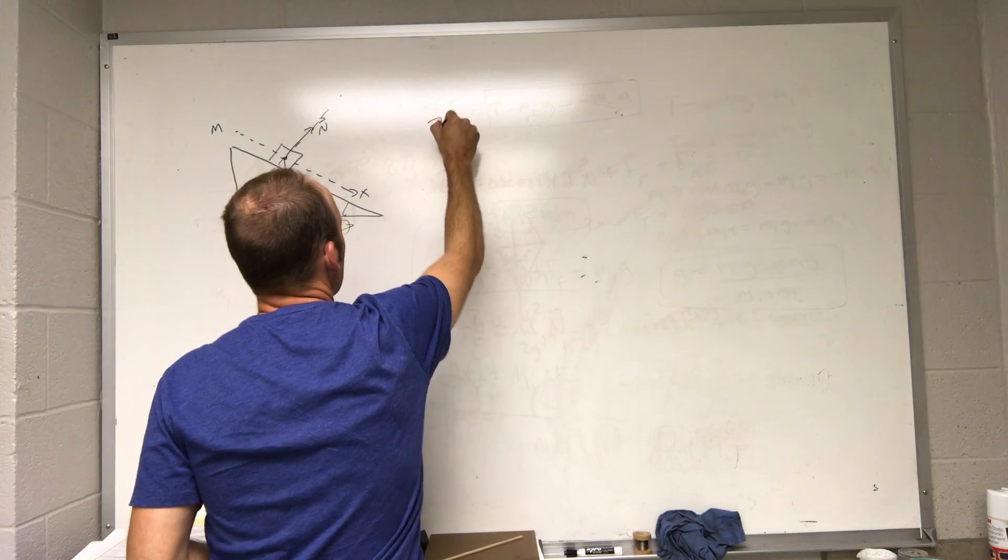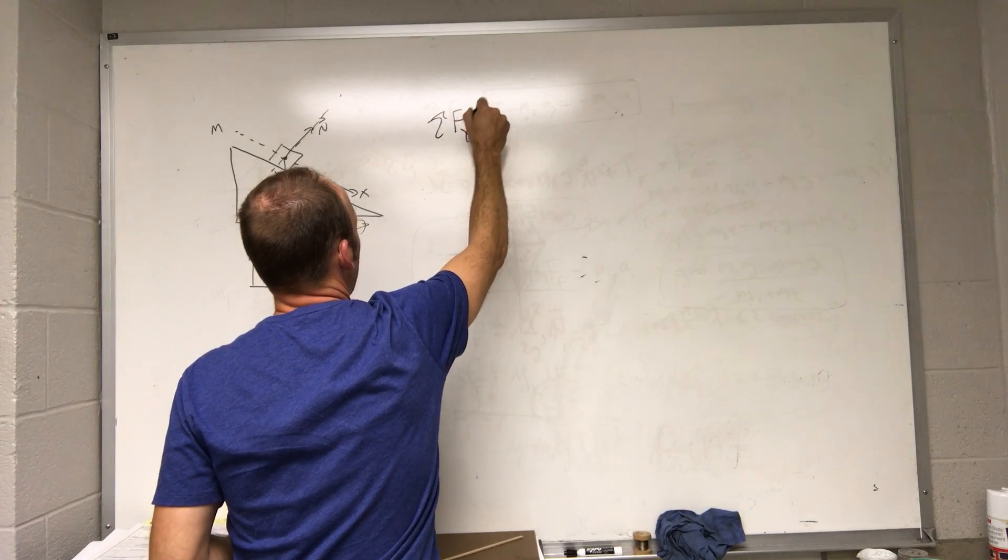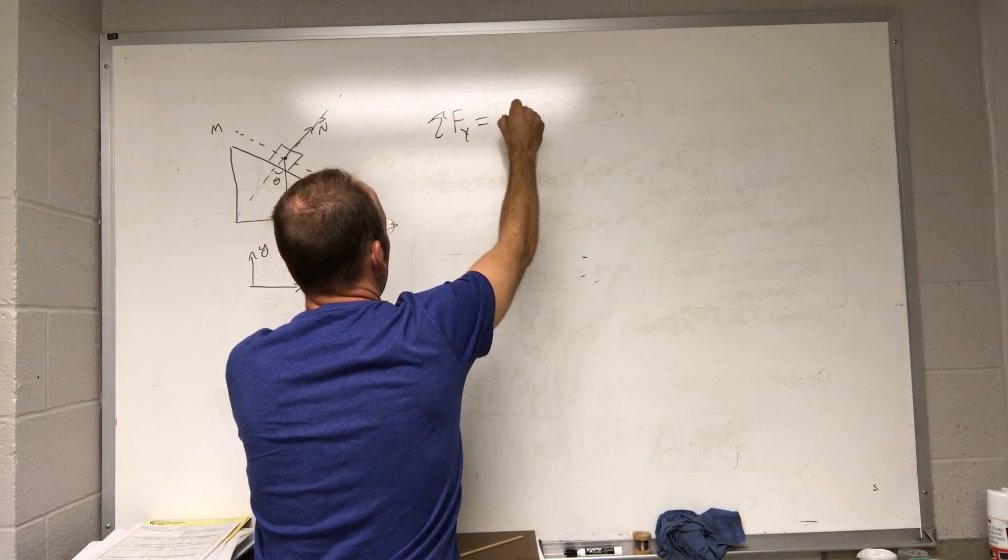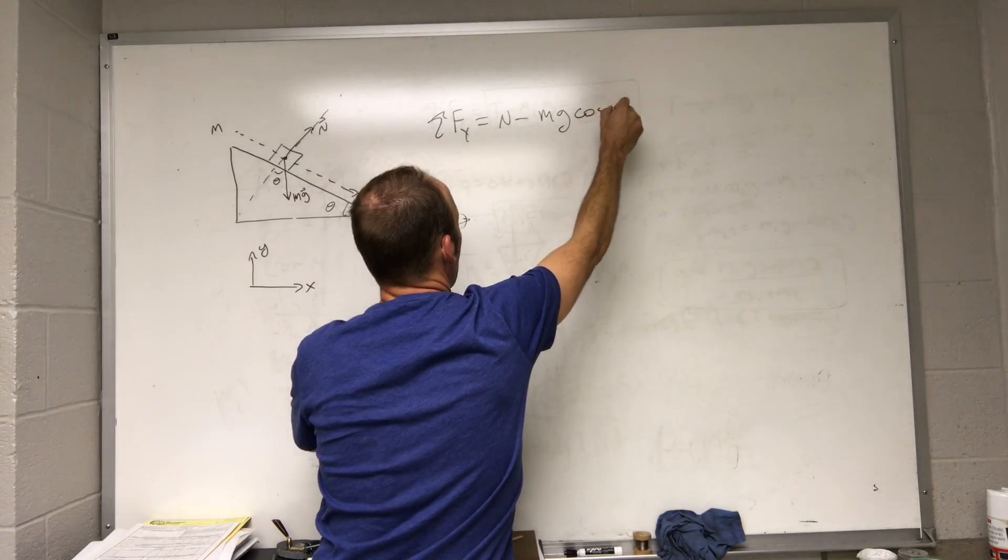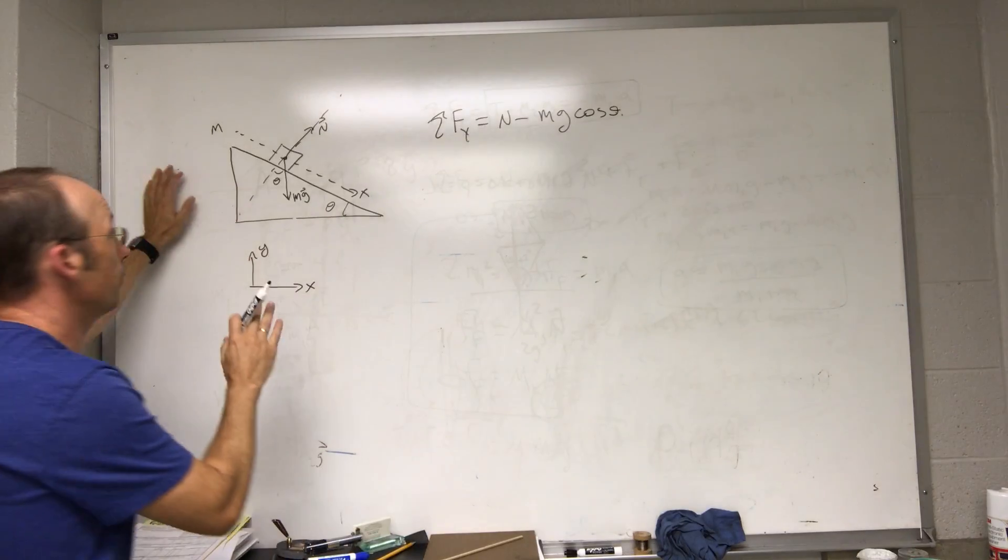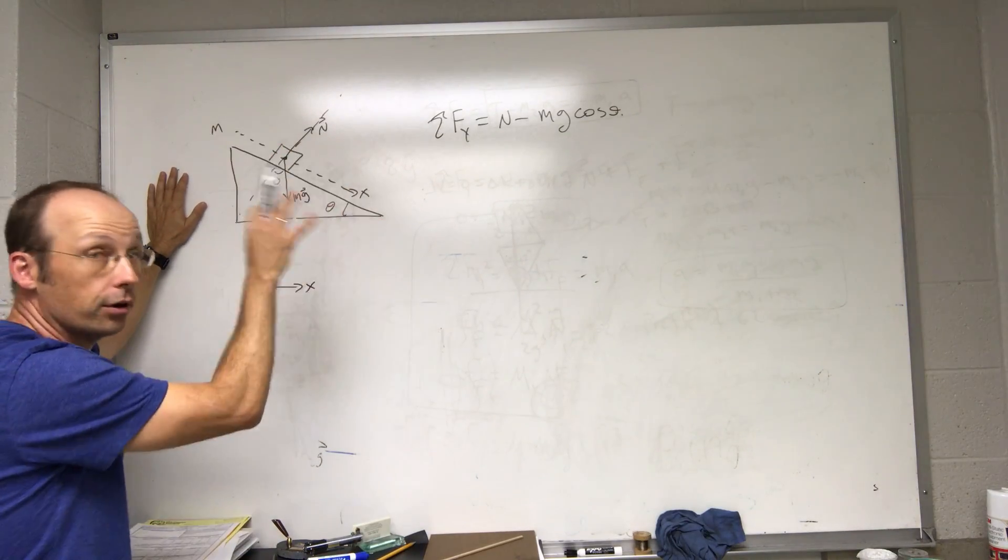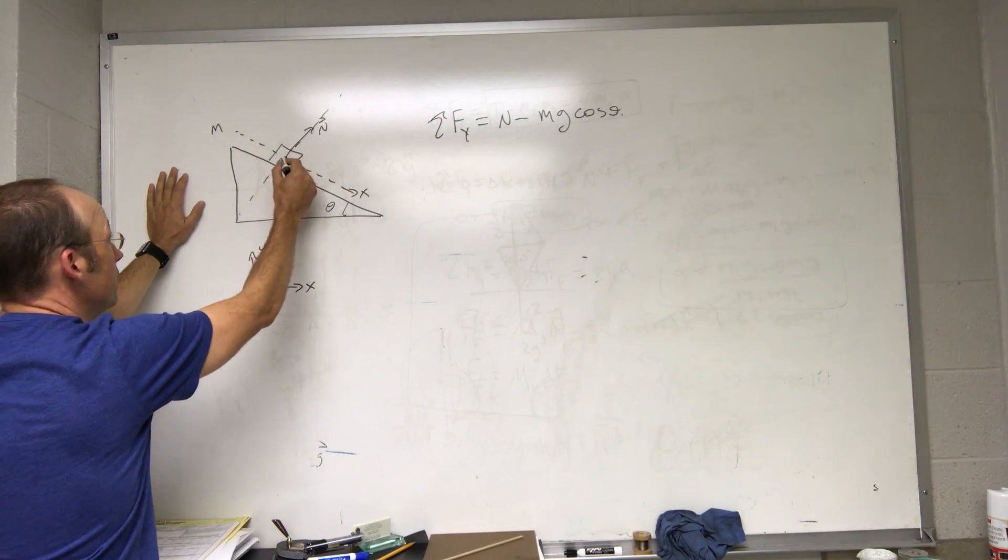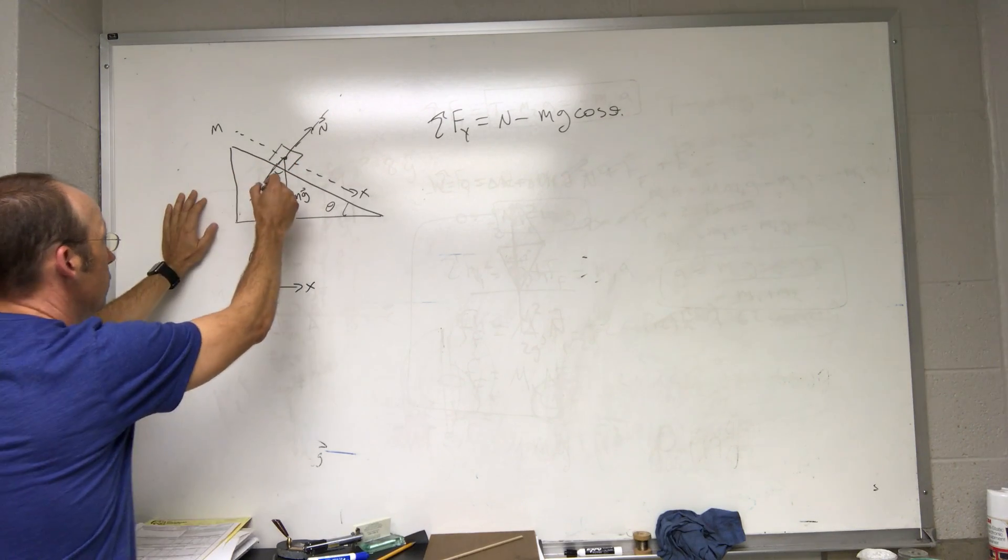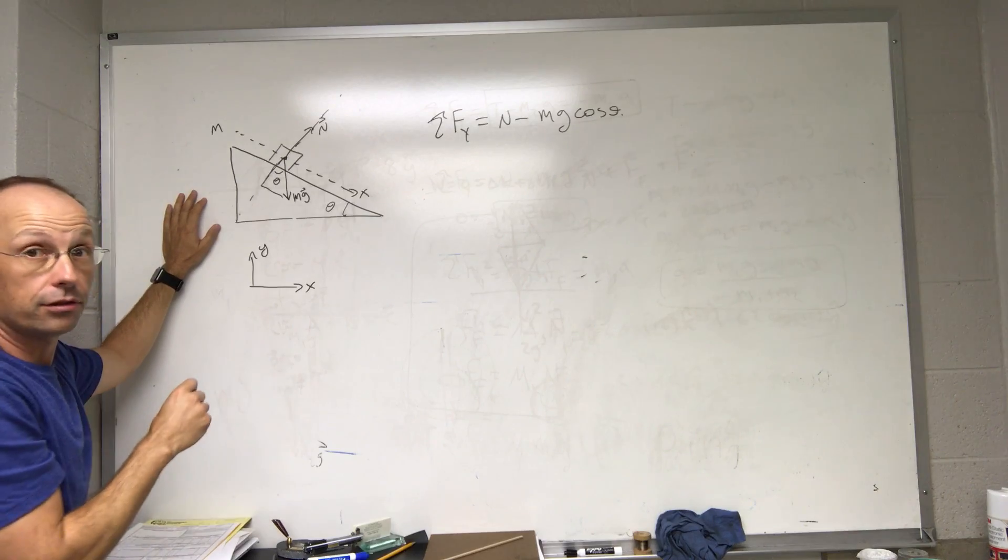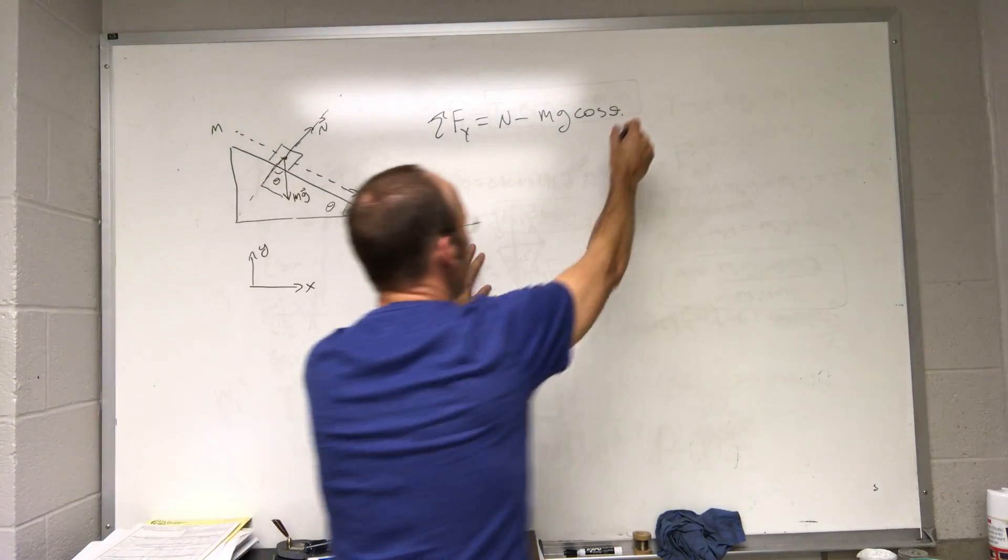So now I can say sum of the forces in the y direction is going to be n minus mg cosine theta. So notice here, in the y direction, there's a component of the gravitational force. It's this part right here. That's the adjacent side of that triangle, and that's the opposite side. So I'd use cosine.